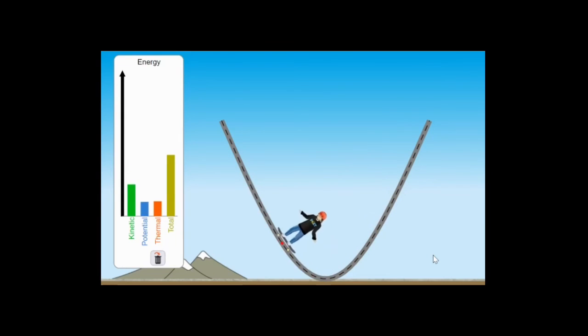We have kinetic energy when they gain speed, potential energy when they gain height, and thermal energy caused by the friction between the board and the ramp. And as you can see, the total amount of energy is the same. It stays constant because energy is conserved.